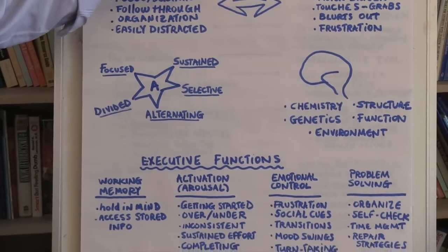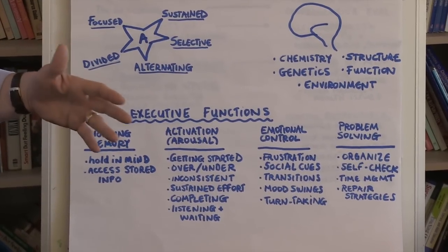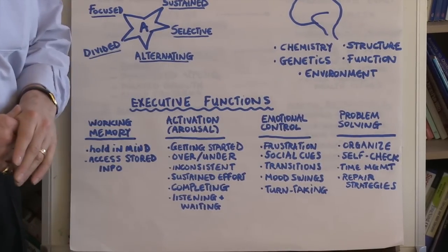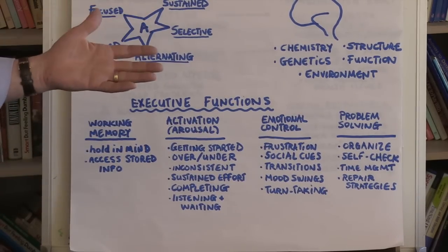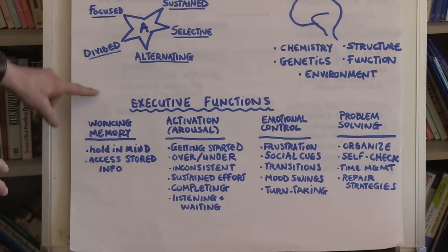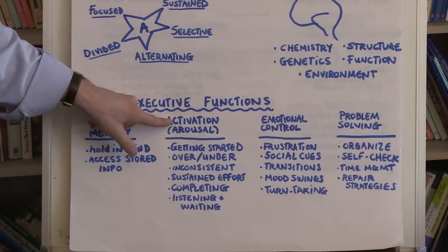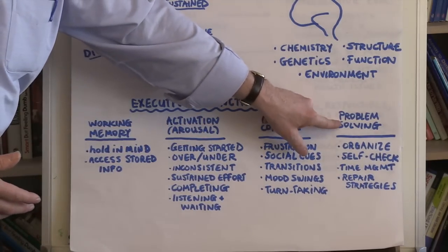One of the things that we absolutely do know is that the behavioral consequences of ADHD manifest themselves in what we refer to as executive functions. So what are some of those executive functions that are hallmarks of ADHD? Well, working memory is one, activation or arousal is another, emotional control is another, and then problem solving.